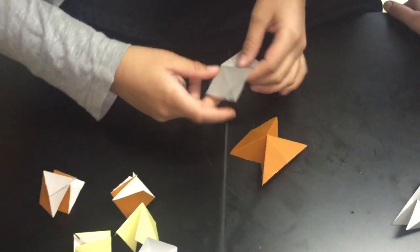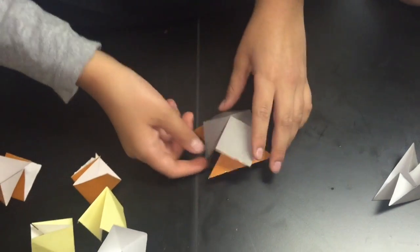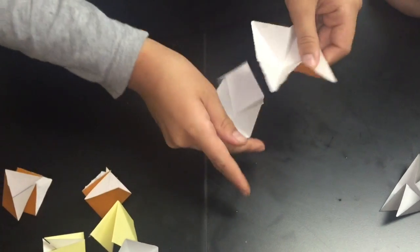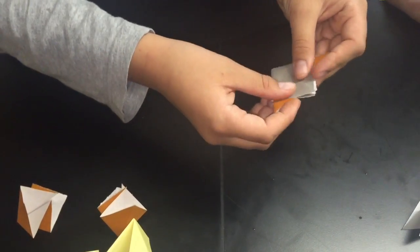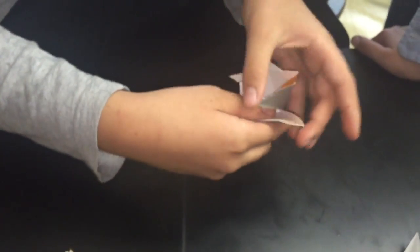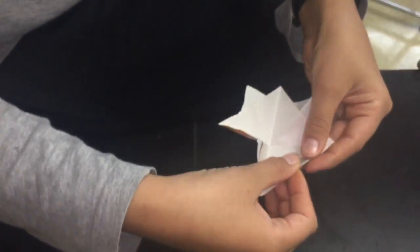When you have your 12 total pieces, take one of the square papers and place it over the triangle paper. Then fold over the edges, folding it inward so that it folds over the triangle piece.